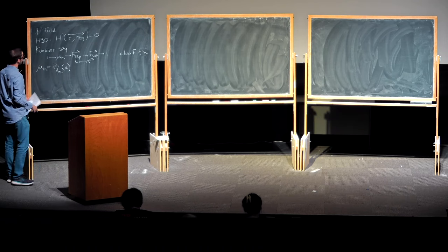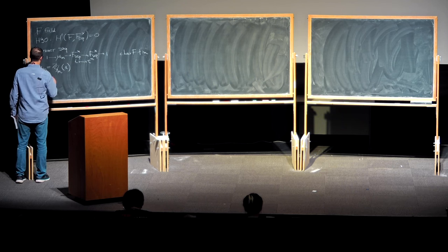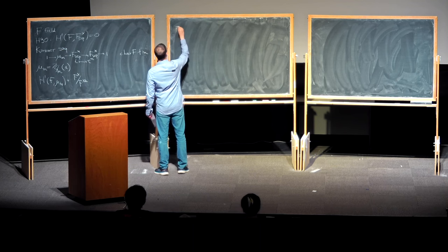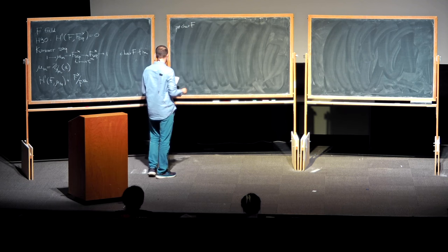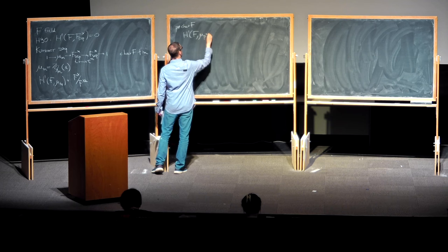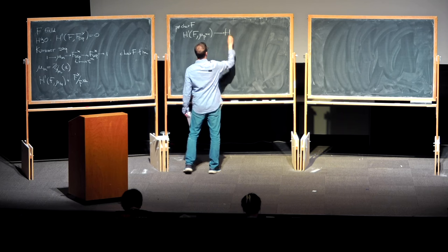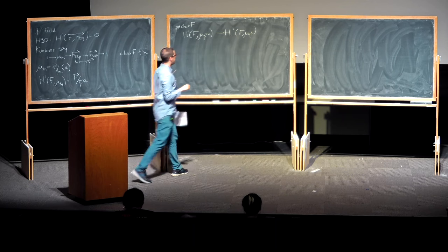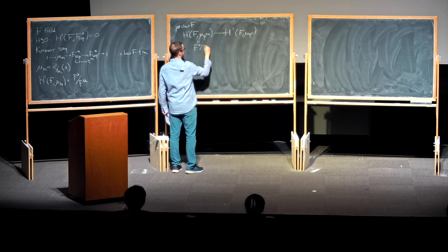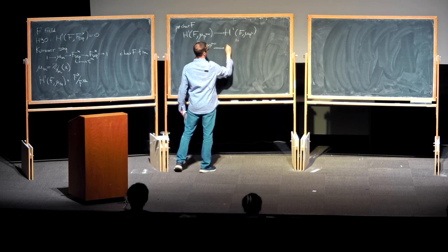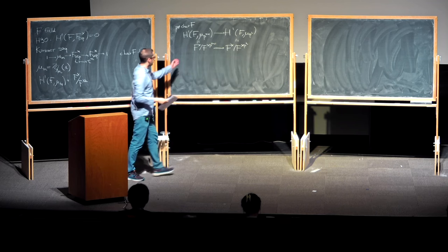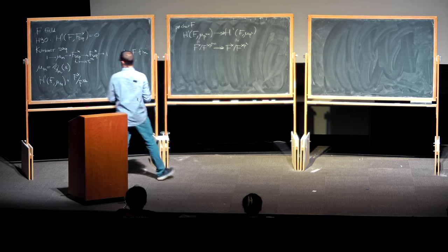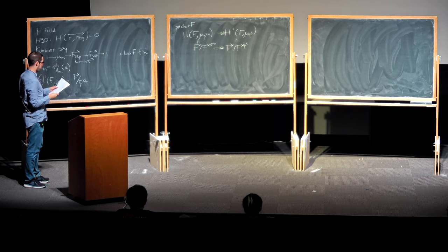In any case, if we take Galois cohomology of this sequence combined with Hilbert 90, we get H1(F, μ_M) ≅ F* / (F*)^M. In particular, if we take a prime different from the characteristic of F, then the reduction map from μ_{p^{n+1}} coefficients to μ_{p^n} is surjective.